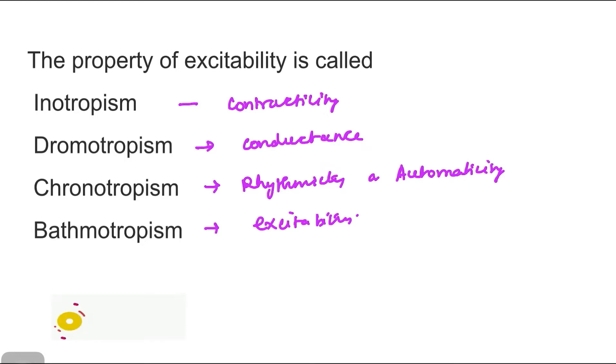So how are we going to remember these things? We in ICU commonly use inotropes like dopamine, dobutamine, or noradrenaline, they increase the contractility of the heart. So we can easily remember with the help of inotropes that we are increasing the contractility of the heart. But for the other three, the easiest among them is chronotropism. Chronotropism is something which deals with the rate and the rhythm. So rhythm is rhythmicity, rate is automaticity.